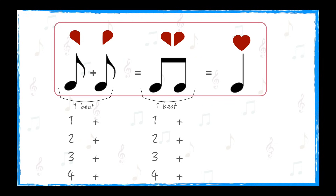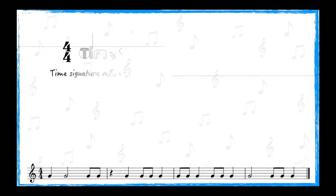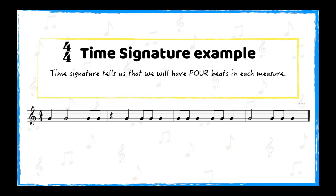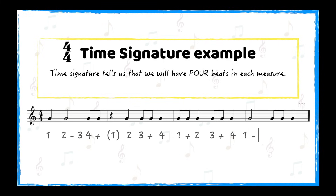Let's look at some rhythmic examples that include eighth notes. We have four beats in the measure, so we are using four numbers to count this rhythm. 1, 2-, 3, 4+. (1), 2, 3+4. 1+2, 3+4. 1-, 2, 3+4.